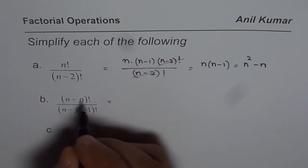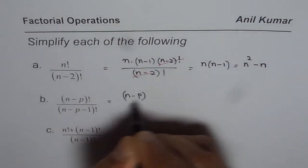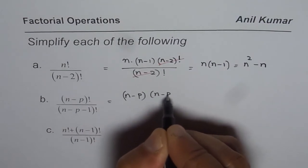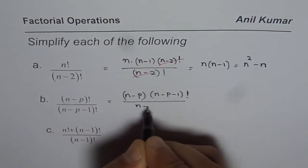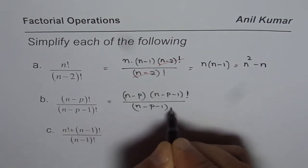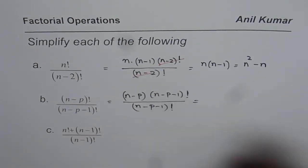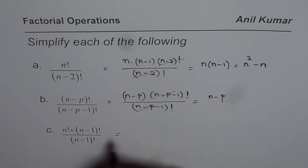n minus p factorial can be written as n minus p times n minus p minus 1 factorial divided by n minus p minus 1 factorial. This term cancels. You are left with n minus p as your solution.